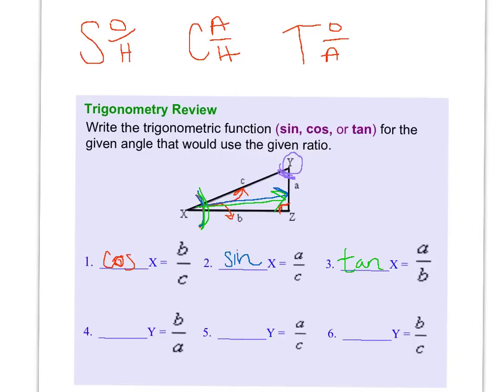And the first one, number 4, is B over A. So B is opposite and A is adjacent. So opposite over adjacent would be tangent.